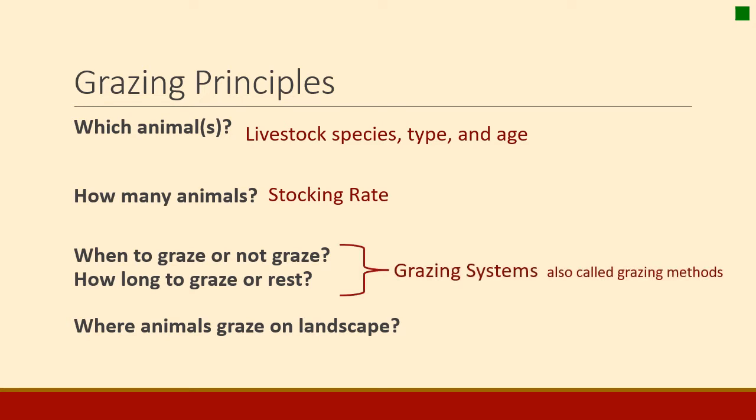And then finally, animal distribution — that's where animals graze on a landscape. Not surprisingly, animals don't graze landscapes evenly all the way across. They have their favorite places to graze and rest. Those are behavioral characteristics we'll talk about in animal behavior, but animal distribution can be managed and we'll talk about that later.